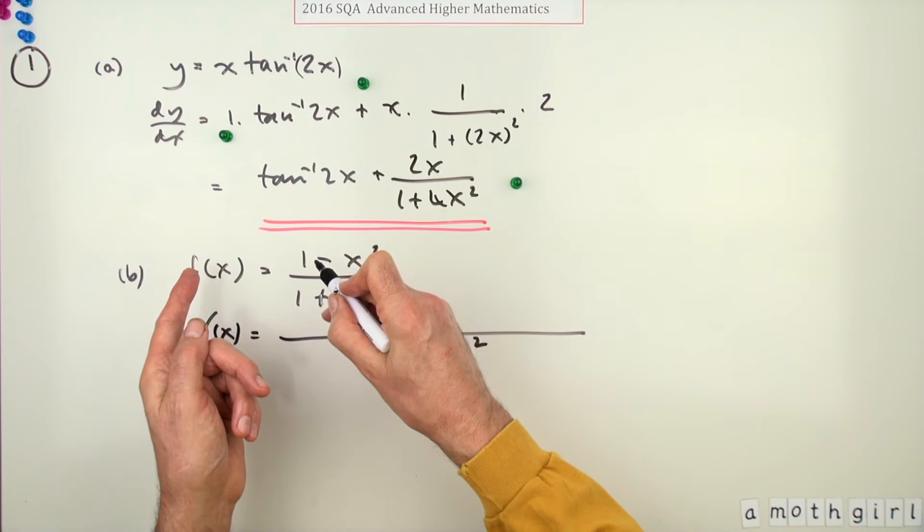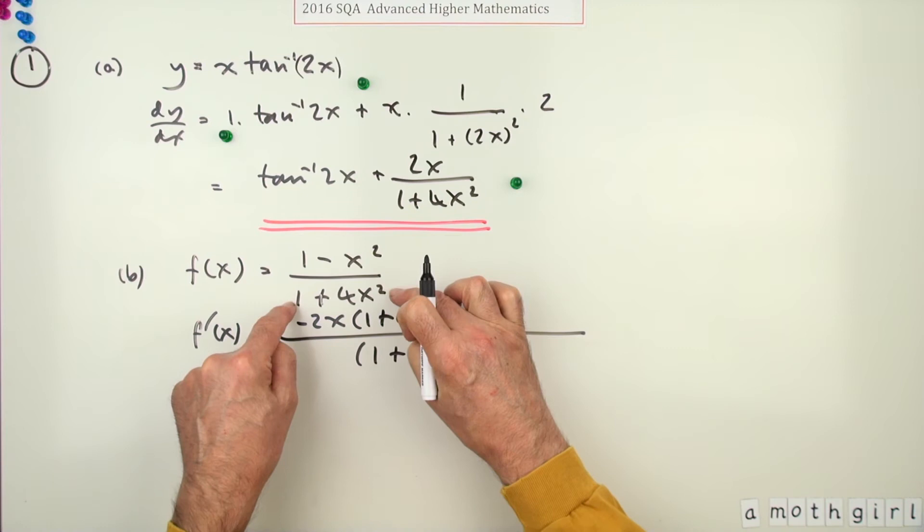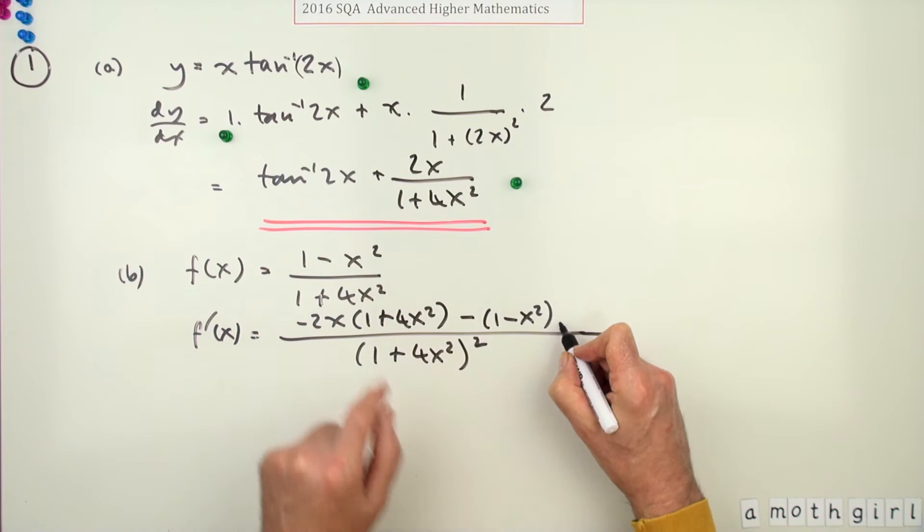And then it's just the same as the product rule, of course. Differentiate one, leave the other, switch over. So differentiate this: negative 2x, leave that alone 1 plus 4x squared, minus because after all that was underneath power negative 1. Minus, now leave that alone negative 1 plus 1 minus x squared, differentiate that which is just going to be 8x.